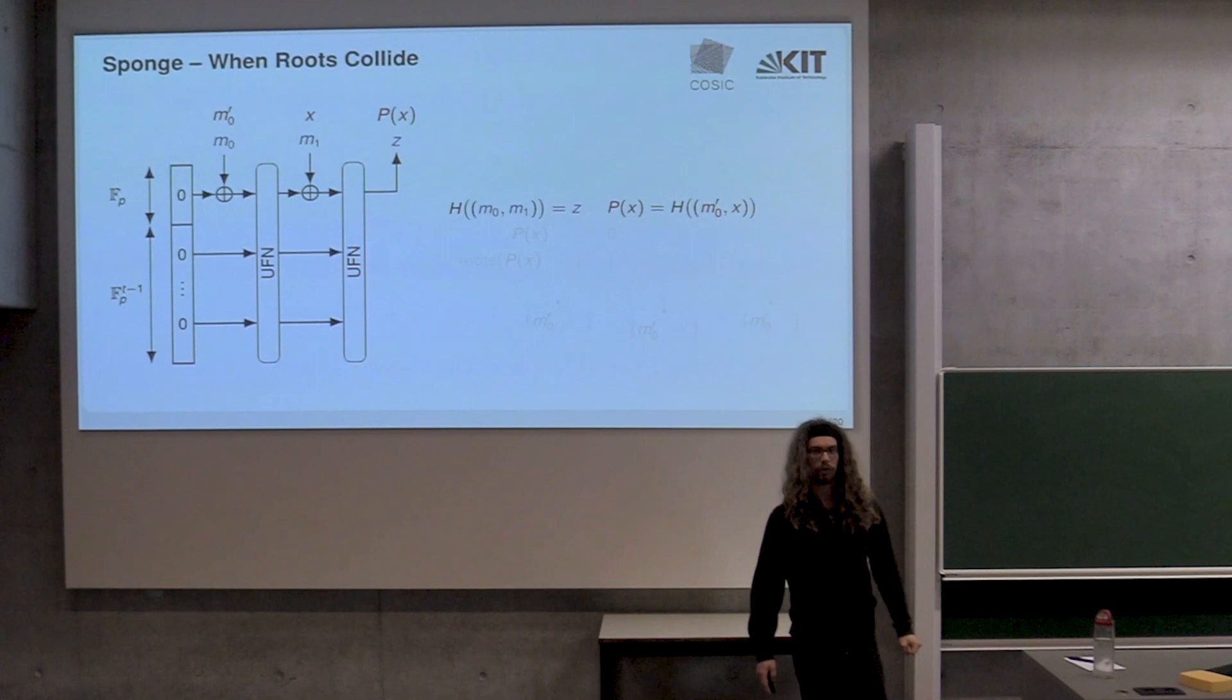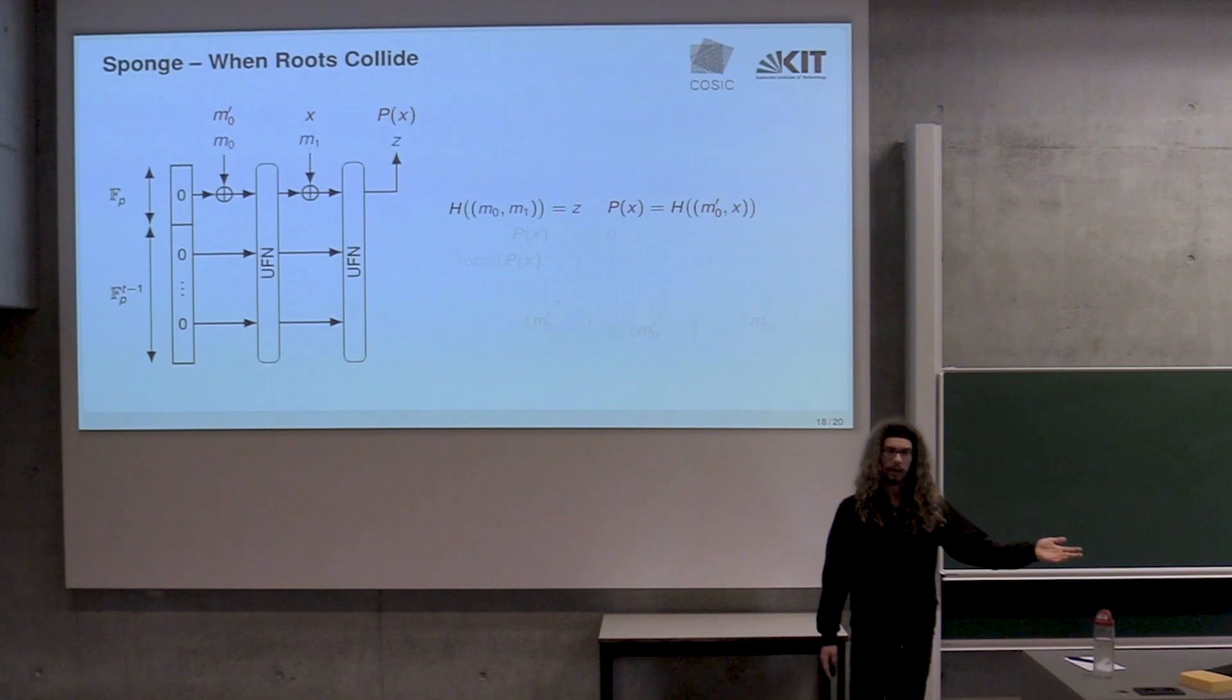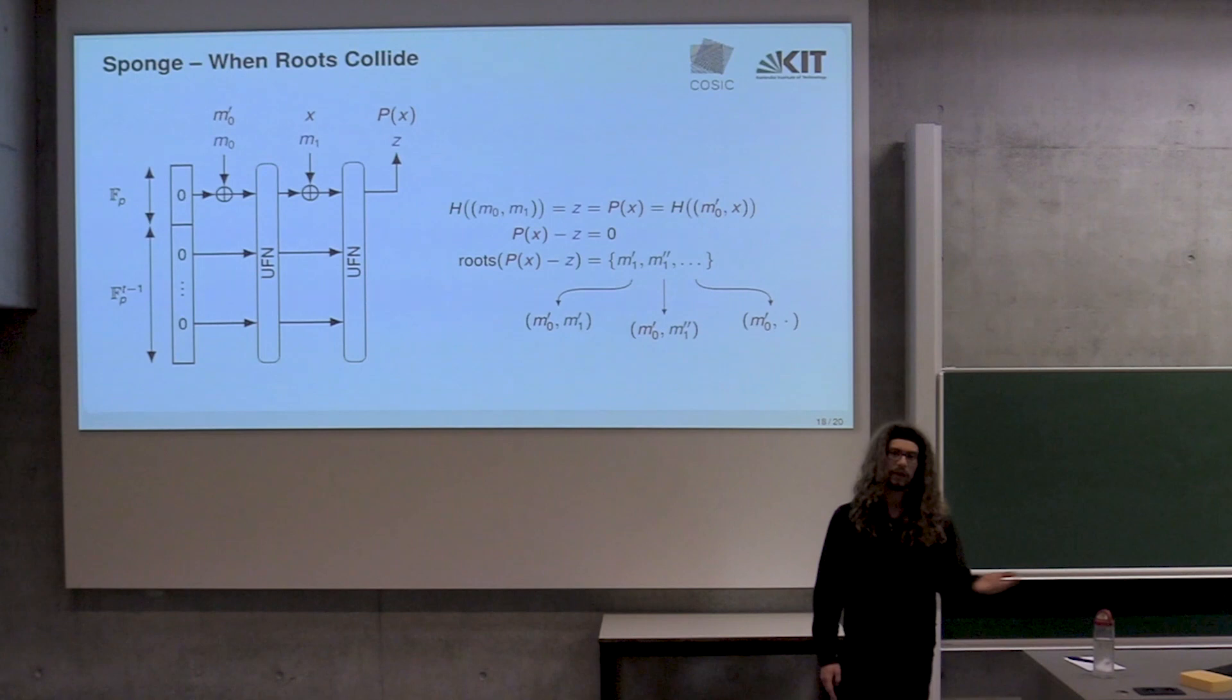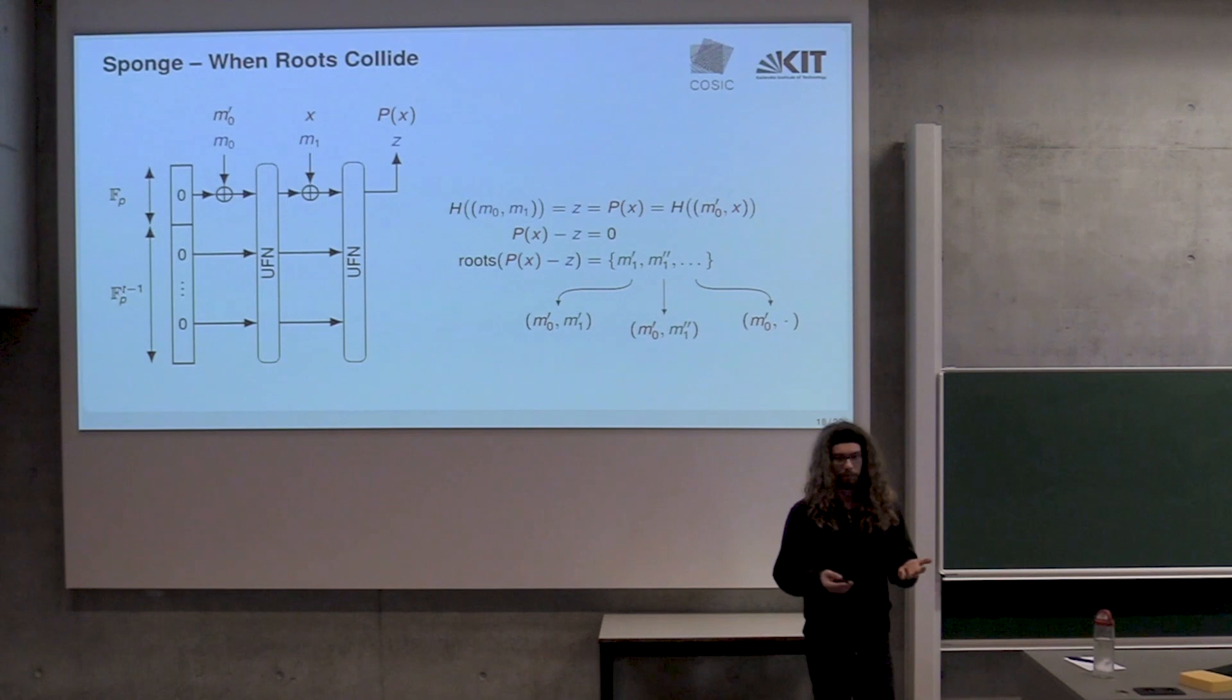Because in the sponge construction, all the parameters are publicly known, we know the key of this block cipher. It's usually just set to zero. What we can do is draw a second message block and symbolically evaluate for the second message block the block cipher, and we get out a polynomial here, P(X). We can also do interpolation, but that's usually more expensive. Now we have the exact same situation as before - we want this polynomial and this specific value Z to be equal. We can apply again this root finding method, and we get a list of things. All these values, they're collisions basically for our hash function.